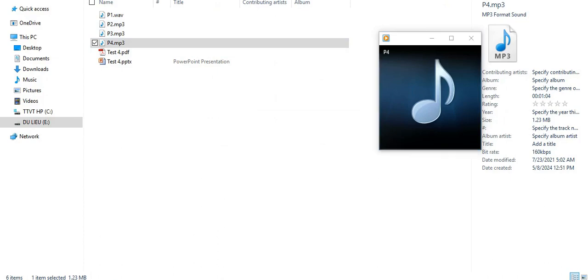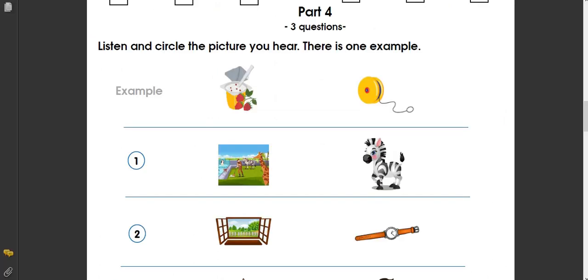Part four. Listen and circle the correct picture. There is one example. Y Y Yo-yo. Can you see the answer? Now listen and circle.